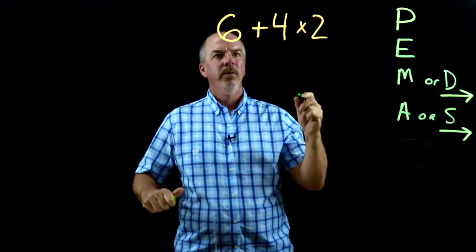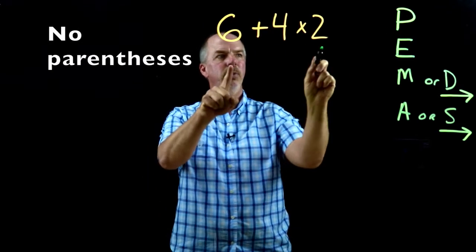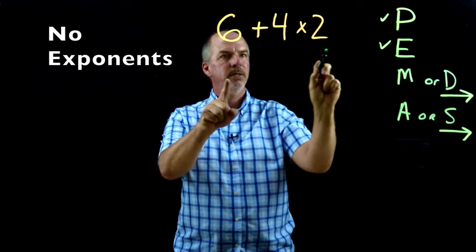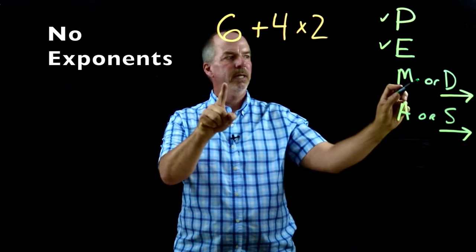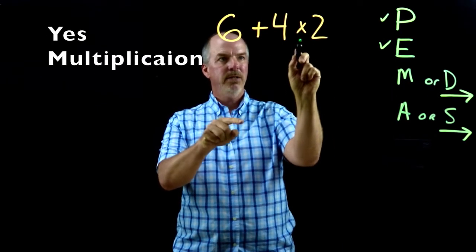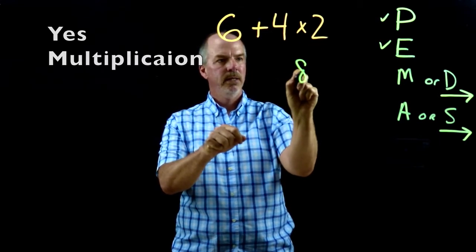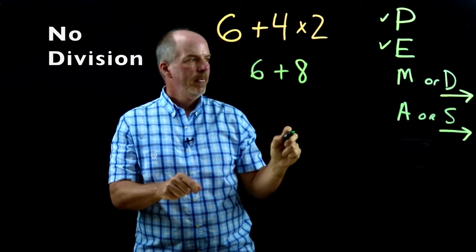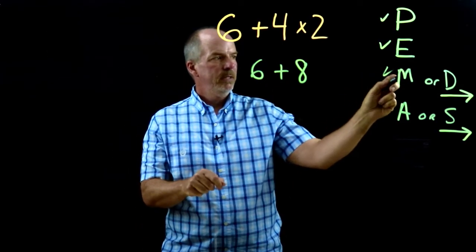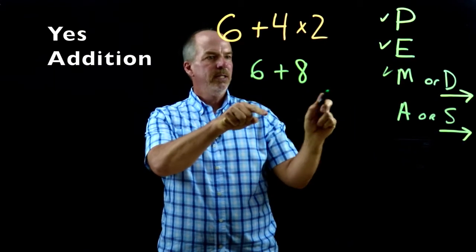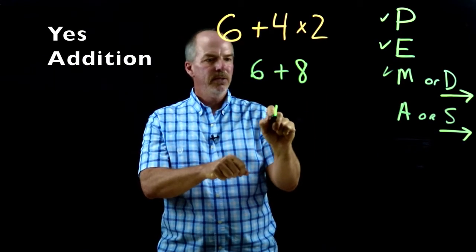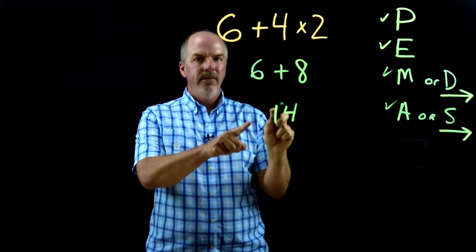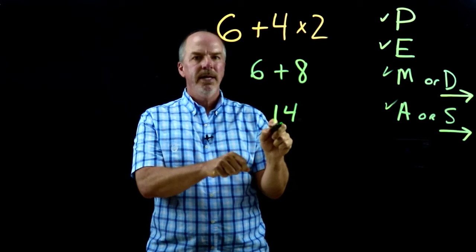Each time we're asked to evaluate, I'm looking for parentheses — there's no parentheses. I look for exponents — there's no exponents. Now I'm looking for multiplication or division, and yes, I have multiplication, so I'm going to do that first. Four times two is eight, and I bring everything else straight down. I've taken care of multiplication, and now I have addition, so I'm going to add those two and get 14. I've used my order of operations and evaluated the expression with an answer of 14.